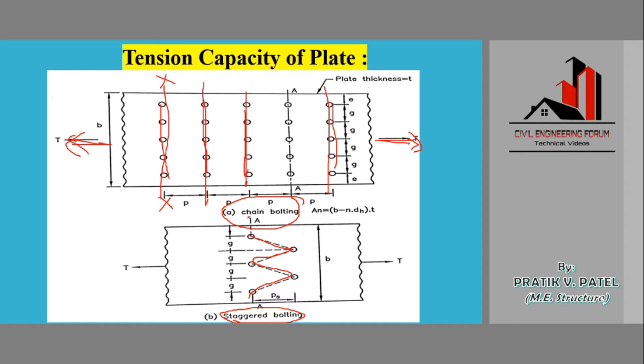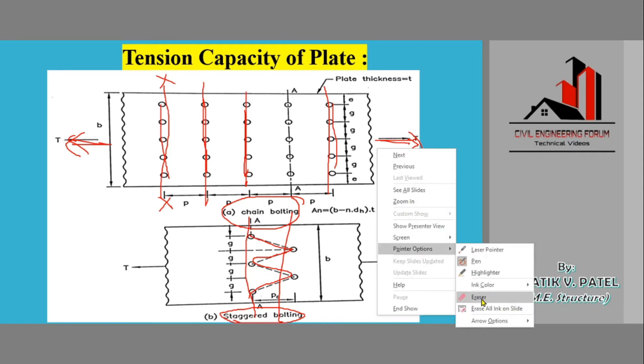Here the number of bolts in the row are reduced. Here there are three or here there are two. In this way we can arrange the bolt holes in such a manner that we can increase the capacity of the plate, the tension capacity of the plate.